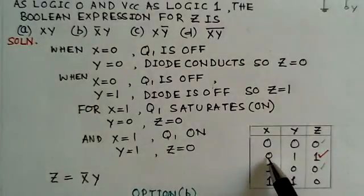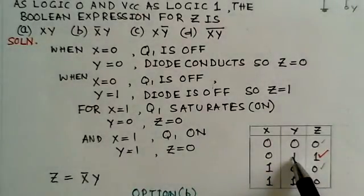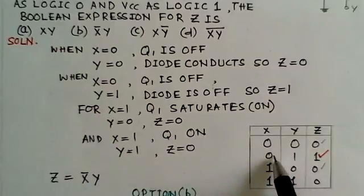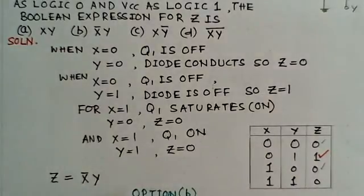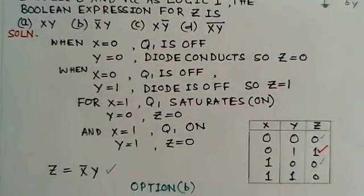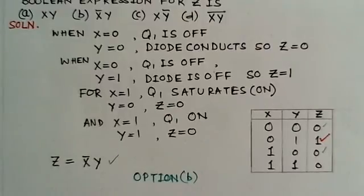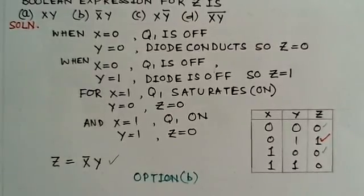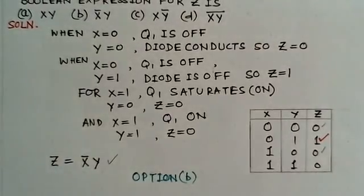This is Z equals to corresponding with this term. This is X is 0 and Y is 1. It will be X bar, since X is 0 here, X bar Y. This option is the right choice, X bar Y. This is option B. Option B is the right choice in this particular problem. Thank you.